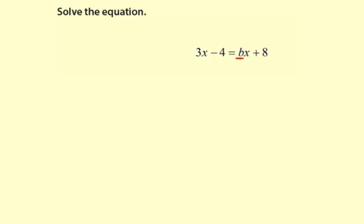This b here is actually an unknown constant, so it could be some number, but we don't know what it is. We're going to solve this equation for x, though.